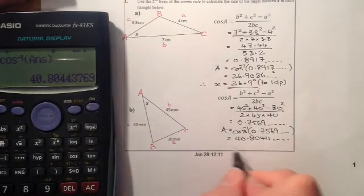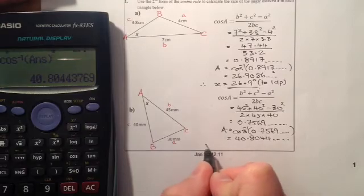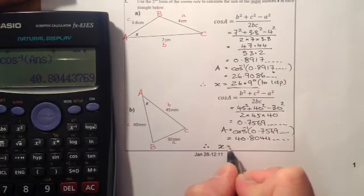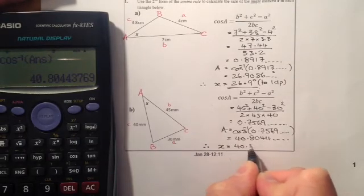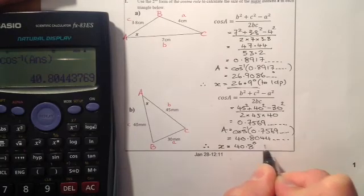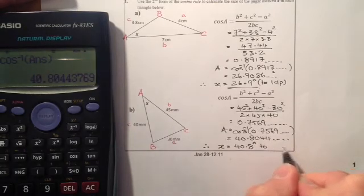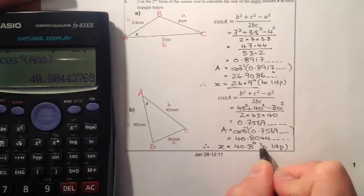It's the angle X that we're looking at. Therefore, X is equal to 40.8 degrees to 1 decimal place.